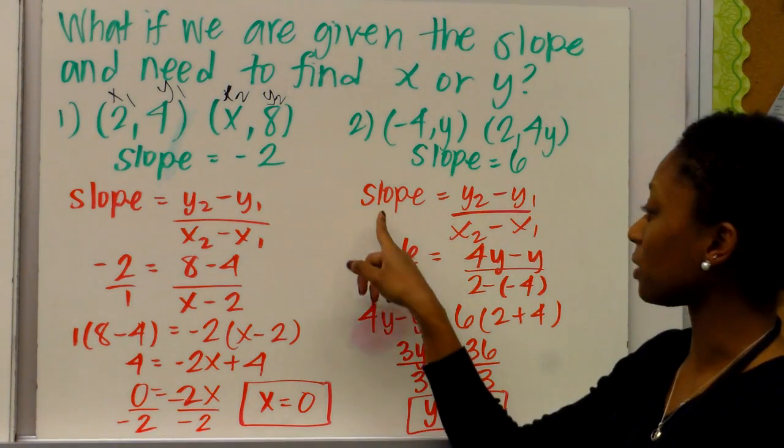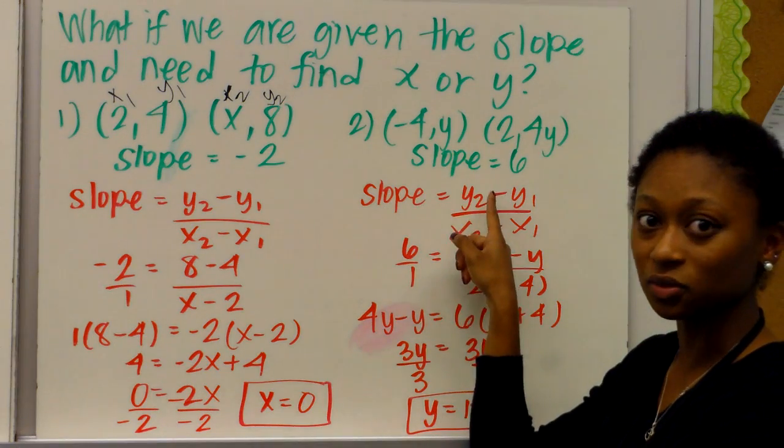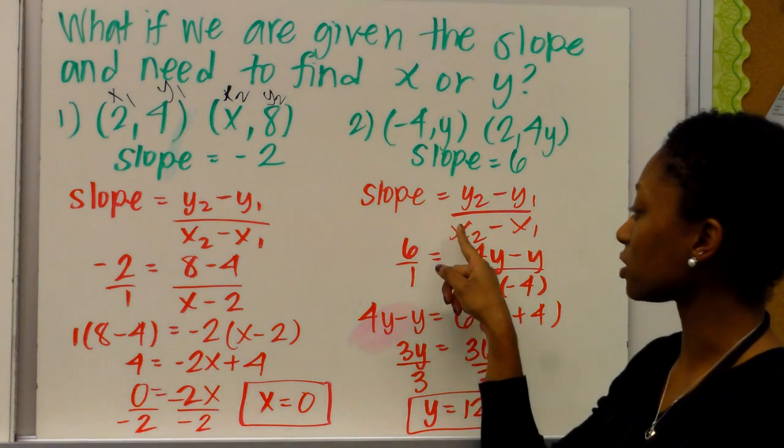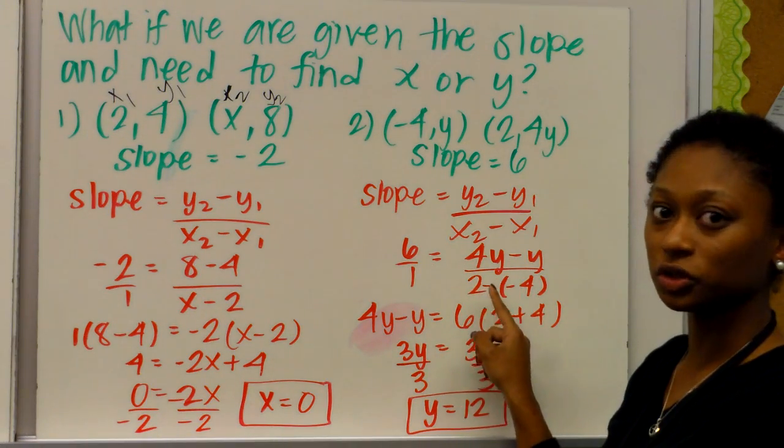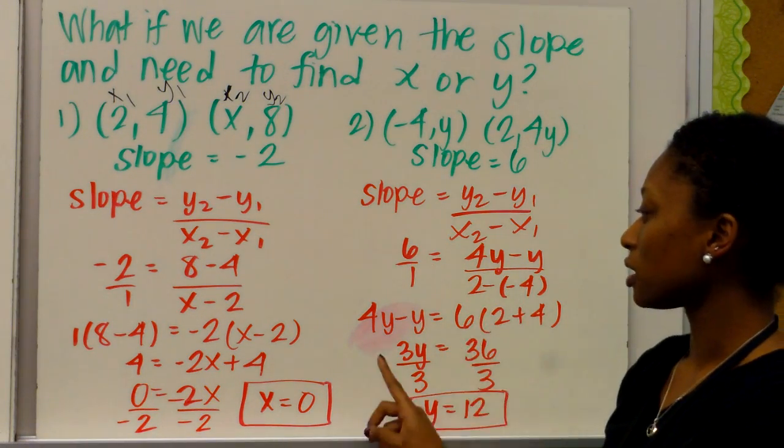so we do the same thing using the same formula. Slope equals y2 minus y1, over x2 minus x1. So 6 equals 4y minus y, over 2 minus a negative 4.